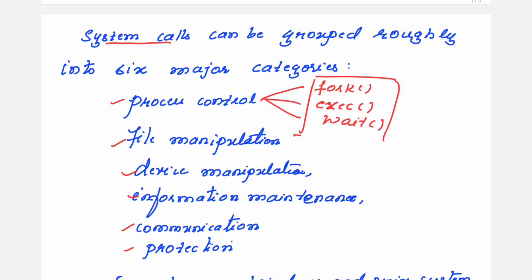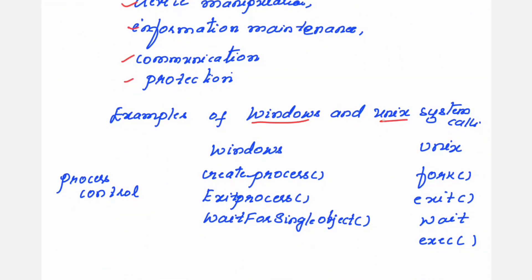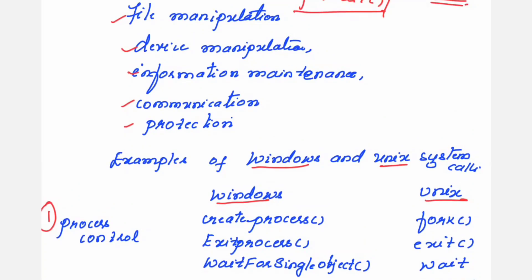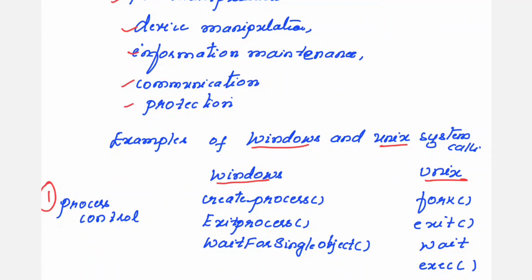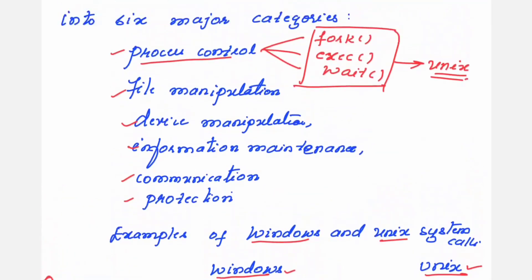These three system calls — fork, wait, and exec — pertain to the UNIX operating system. For Windows operating systems, the same functionality is used with other names. For process control, under Windows we have create process, exit process, and wait for single object. You can refer to a textbook to check the system calls available for files, devices, information, communication, and protection.